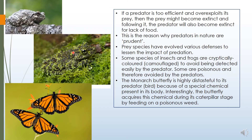You can see how the frog has camouflaged itself — its body color blends with its surroundings, so the predator cannot identify the presence of the prey. A snake, for example, will find it difficult to identify whether the frog is present because it is totally camouflaged with its surroundings. Some species of insects and frogs are cryptically colored to avoid being detected easily by predators. Some are poisonous and therefore avoided by predators, as certain organisms have chemicals that can be harmful to predators.